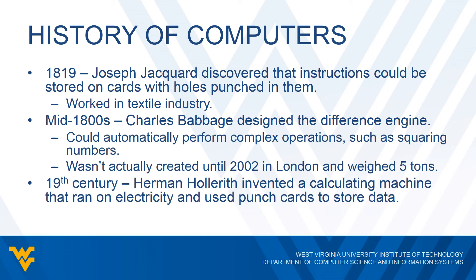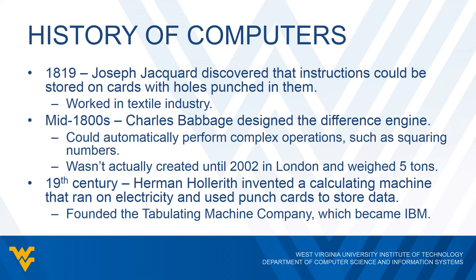In the 19th century Herman Hollerith created a calculating machine that ran on electricity and used punch cards to store data. As a result of this calculating machine, he ended up creating the Tabulating Machine Company, which you know today as IBM.